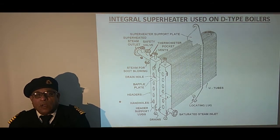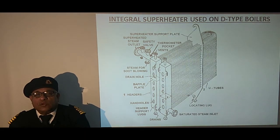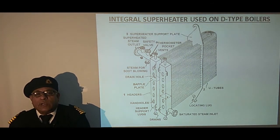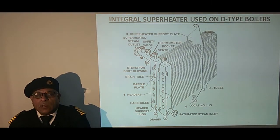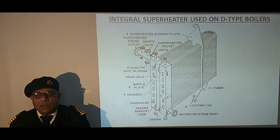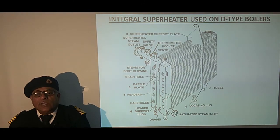First we have the two headers. Then we have U-tubes attached to the headers. Then we have the superheater support plate by which it is attached. Next is the locating lug for placing it in position. Then we have two baffle plates — one on the outlet and one on the inlet. Then we have the header support lugs to support the header.